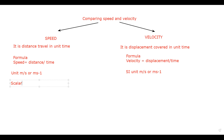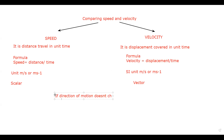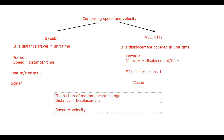Speed is a scalar quantity, whereas velocity is a vector quantity. Keep one thing in mind: if the direction of motion does not change, then the distance will be equal to the displacement, or we can say the speed will be equal to the velocity in magnitude. If the direction is not changing, the displacement and distance will be the same, and speed and velocity will have the same magnitudes. This is a comparison between speed and velocity.